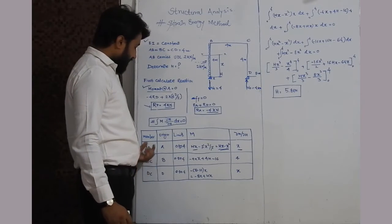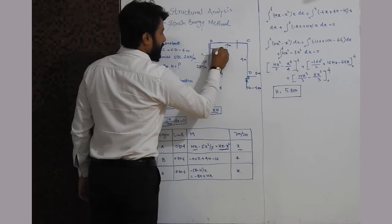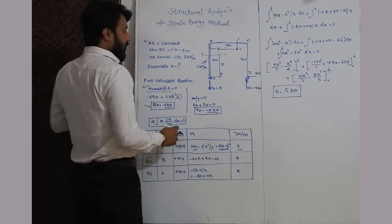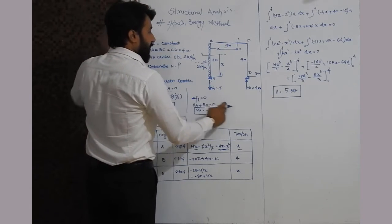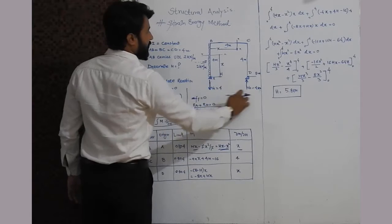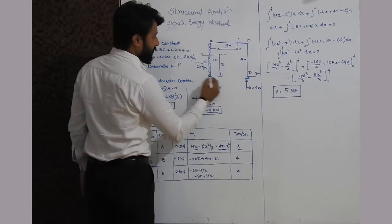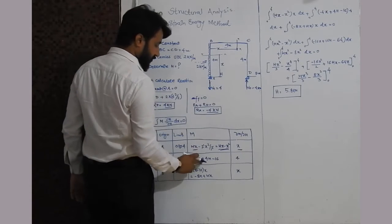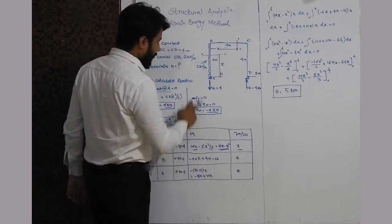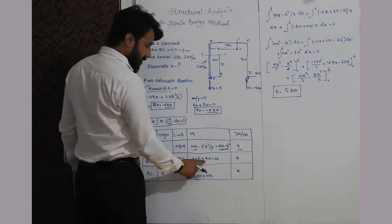For member BC, the origin is B and the limit is 0 to 4. At a section distance x from B: VA (= −4) acts anticlockwise giving −4x; H acts clockwise at a height of 4 m giving +4H; and the full UDL on AB gives −2×4²/2 = −16 (anticlockwise). Therefore M = −4x + 4H − 16, and ∂M/∂H = 4.